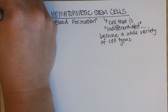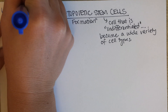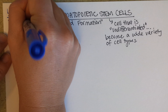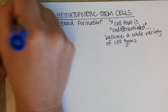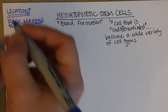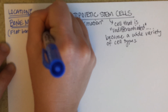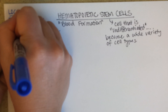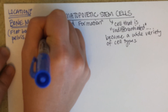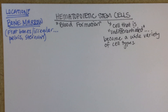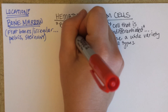Now where is this happening? Bone marrow — specifically flat bones, or sometimes irregular flat bones. So the pelvis and the sternum are two common places that a bone marrow sampling can be taken. Hematopoietic stem cells differentiate a little bit to become either a myeloid stem cell or a lymphoid stem cell.